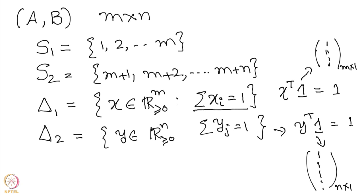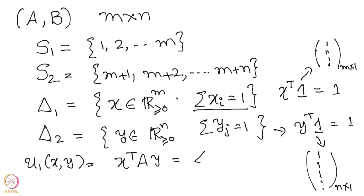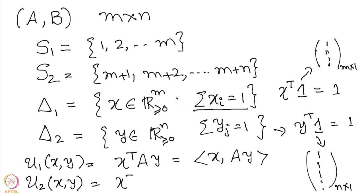This is the notation. We also have the payoff functions: player one's mixed payoff function is u_1(x, y) = x^T A y. We have also used the inner product notation. Similarly, player two's payoff is x^T B y, which is the inner product of x with By. This notation was already introduced in previous sessions.